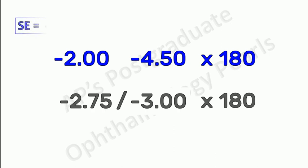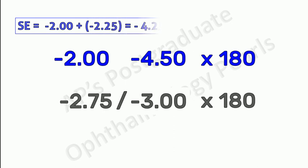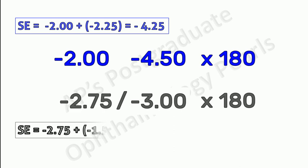Let us check the spherical equivalent to make sure that our calculation is correct. The spherical equivalent of the first prescription is minus 2 plus half of minus 4.5, that is minus 2.25, we get minus 4.25. For the new prescription it is minus 2.75 plus half of minus 3, that is minus 1.5, which gives us again minus 4.25.